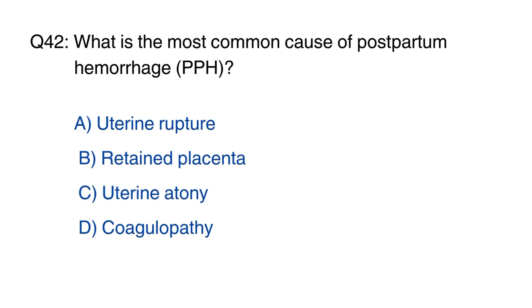Question 42: What is the most common cause of postpartum hemorrhage (PPH)? The right option is option C, uterine atony.